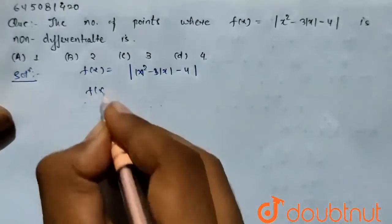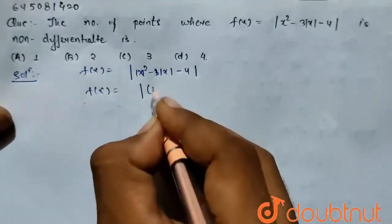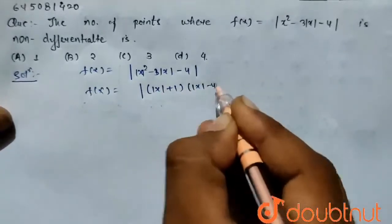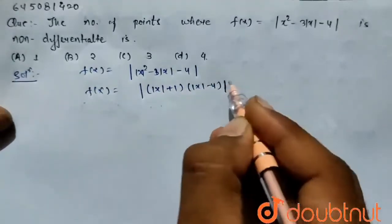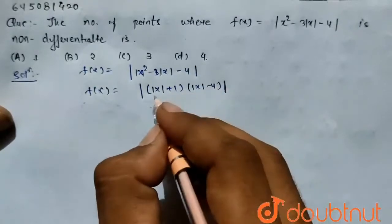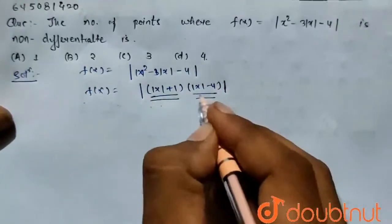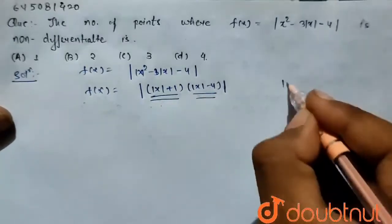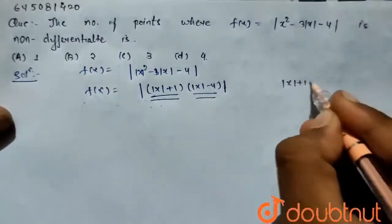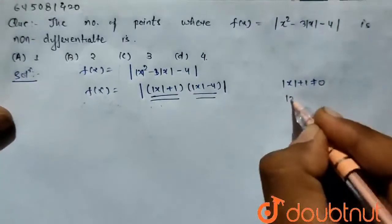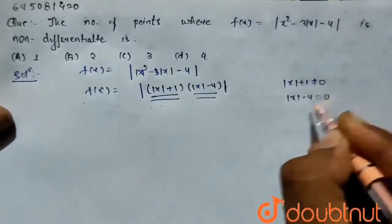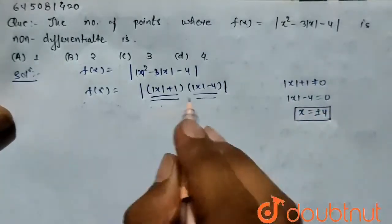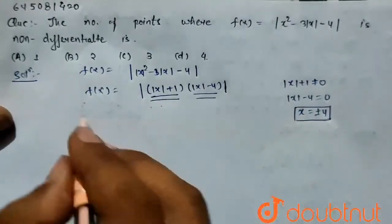Here we can write f(x) as |x + 1| and |x - 4|. So this function changes its nature when it becomes 0. So |x + 1| = 0 and |x - 4| = 0, which means the value of x is equal to ±4. So the function changes its nature at these points.